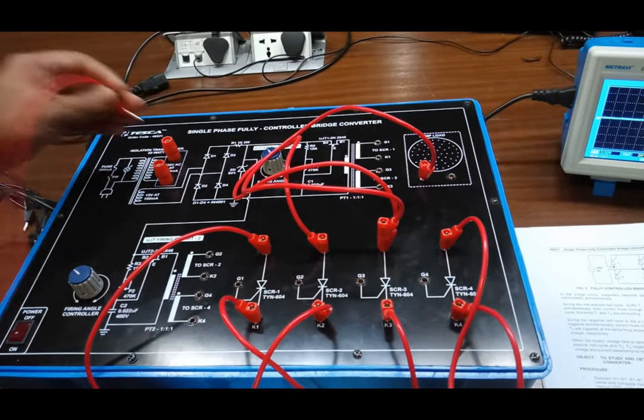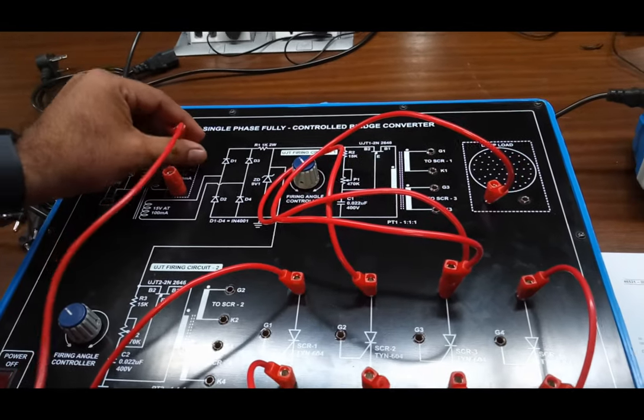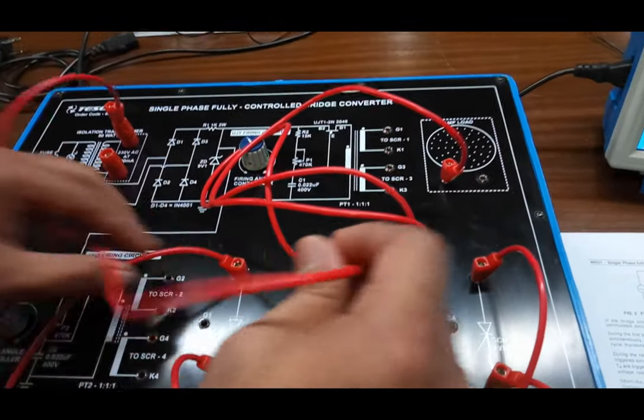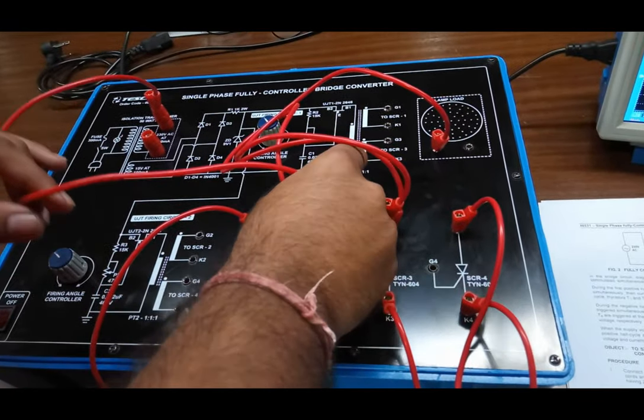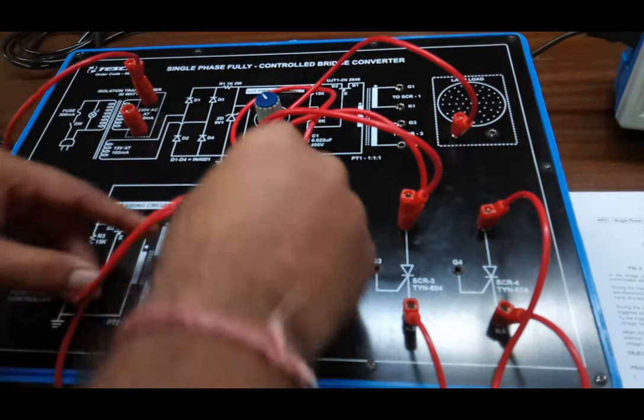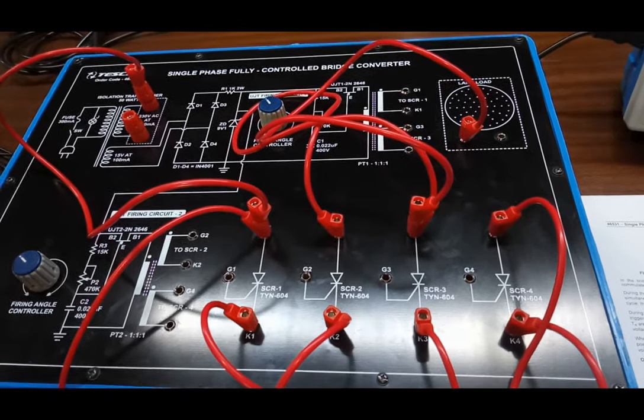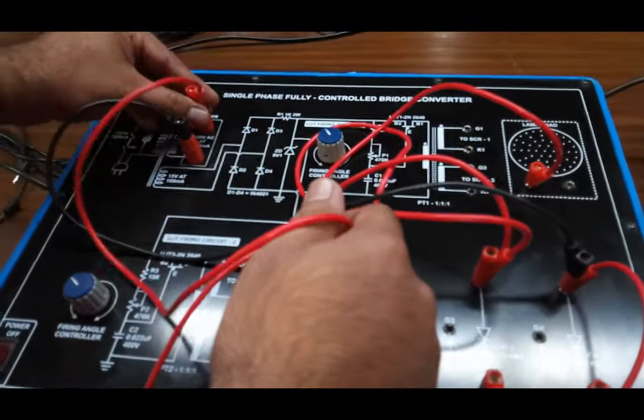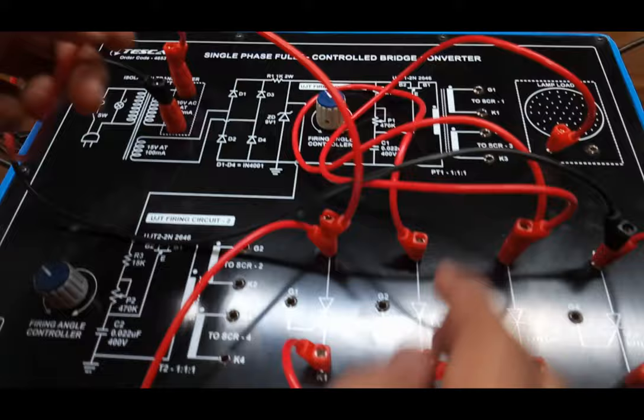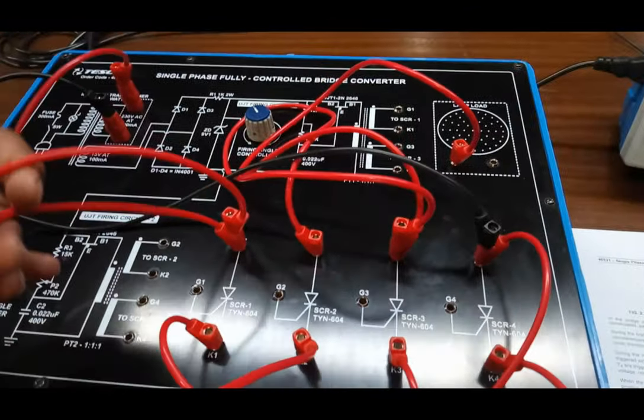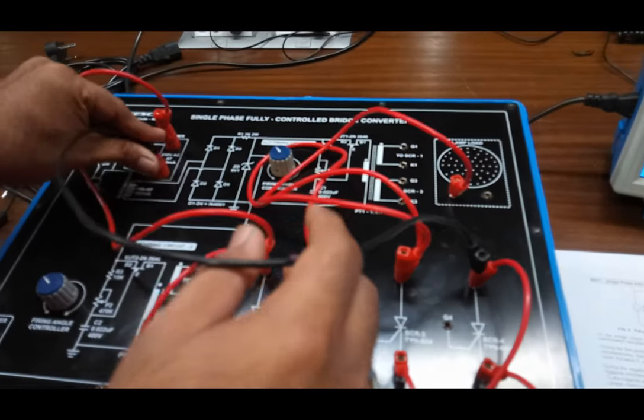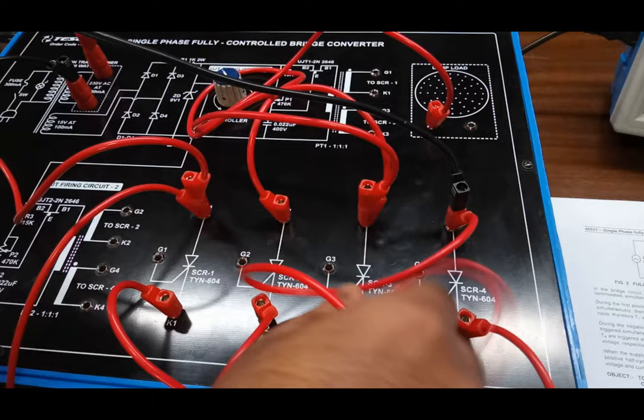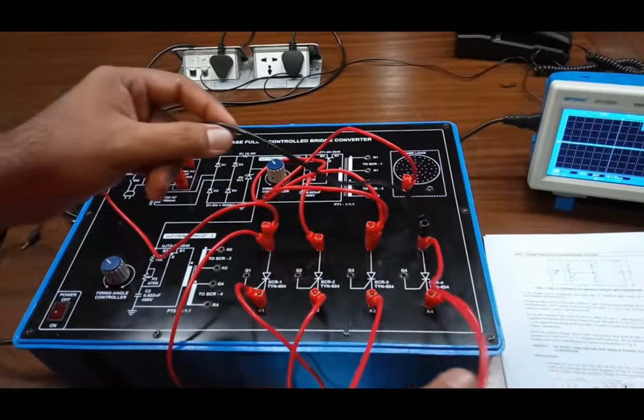Now, for supply, connect one terminal of 230V to... we have connected one terminal of 230V supply to anode of T1 or cathode of T2. They both are shorted together. And the other terminal of this supply to anode of T4 or cathode of T3. These terminals are also short circuited.